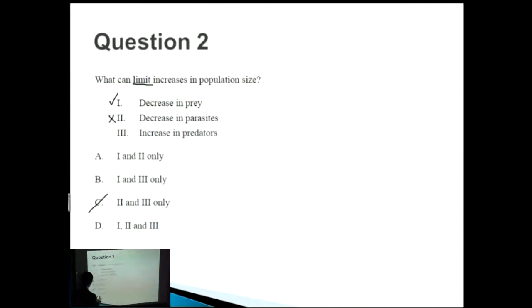So anything that has a two we can get rid of. So D and A. We know that the answer is B. And three, an increase in predators, that does make sense as well, because the more, say, dinosaurs there were in an environment, then the less your children are going to get eaten. So your population size is going to be limited as well.